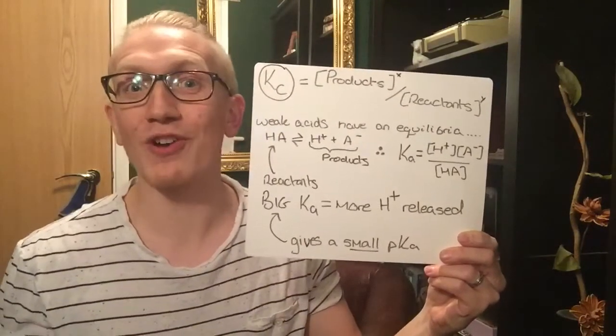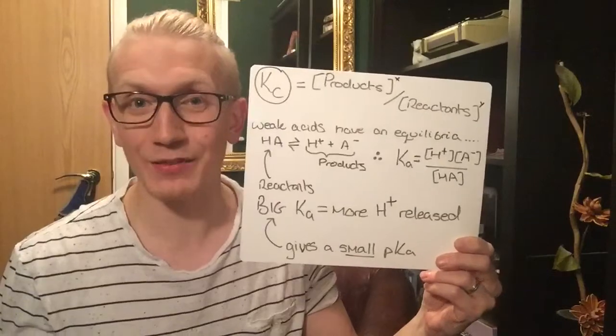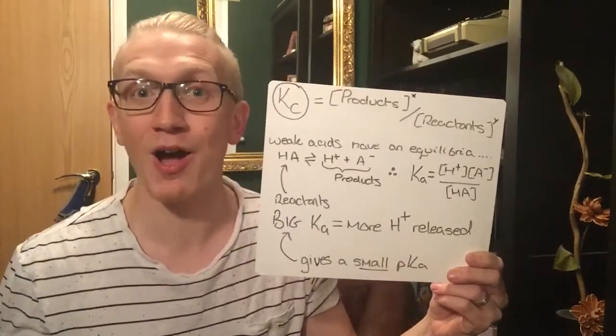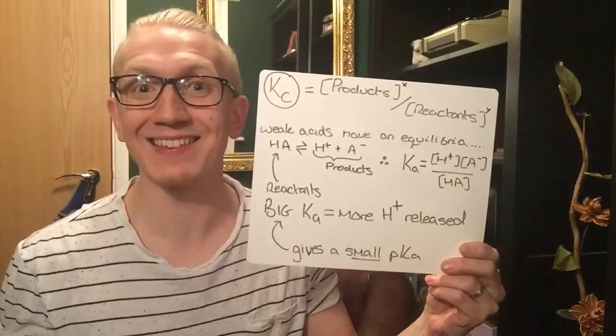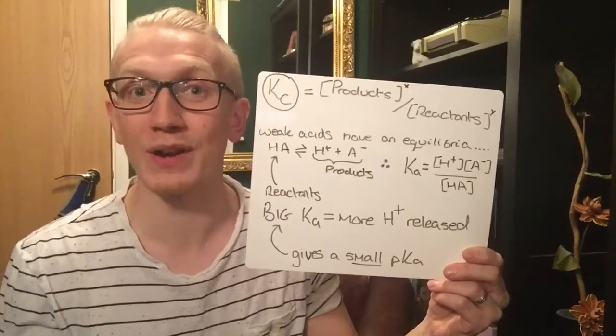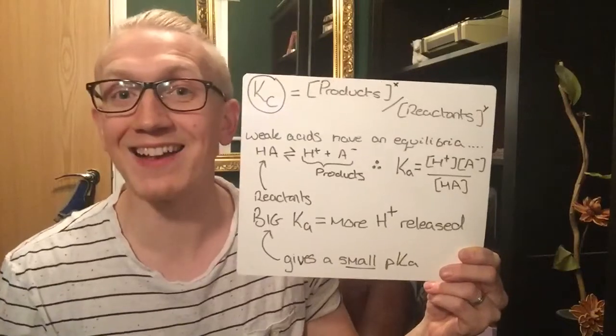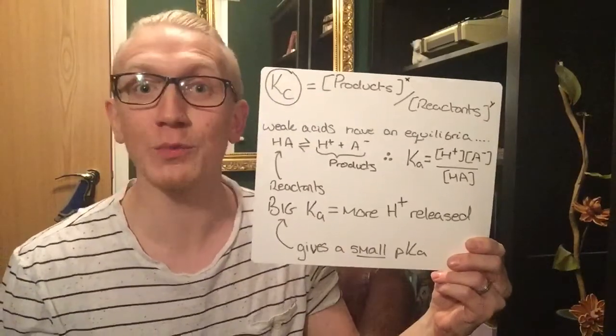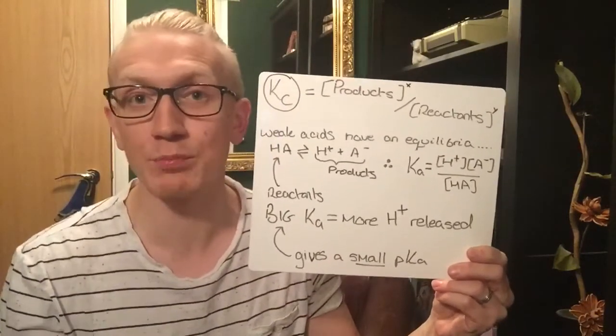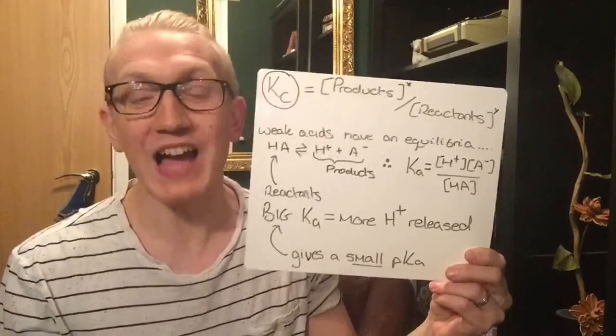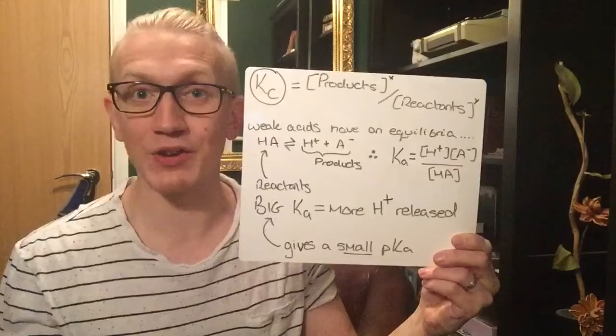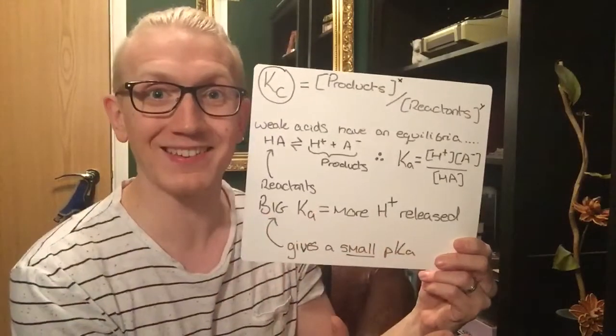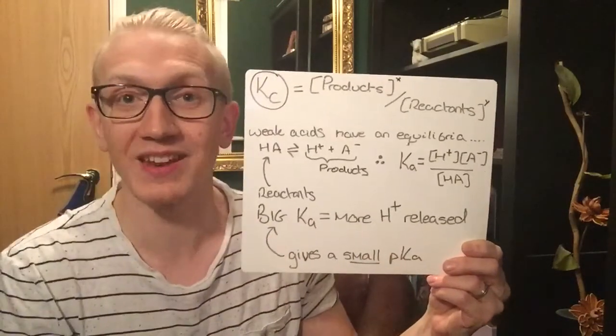Then what we've got is what is a weak acid. A weak acid is something that dissociates partially or slightly. That means a weak acid actually has an equilibrium. Because it has an equilibrium, that means we can write an equilibrium constant Kc. Just with any other Kc, the bigger the value, the more to the right the position of that equilibrium must lie.